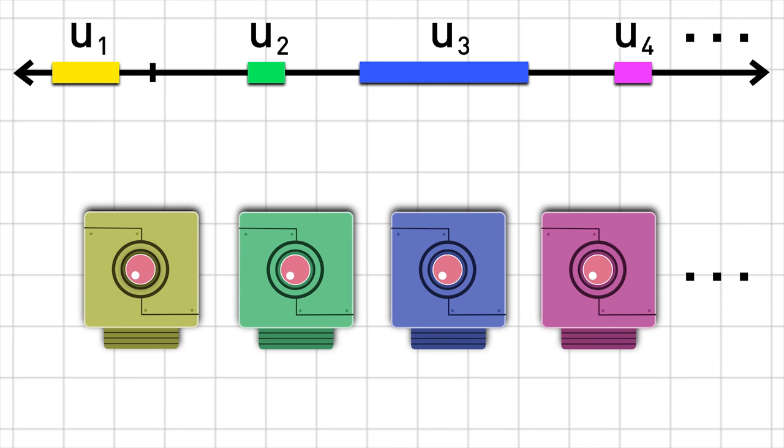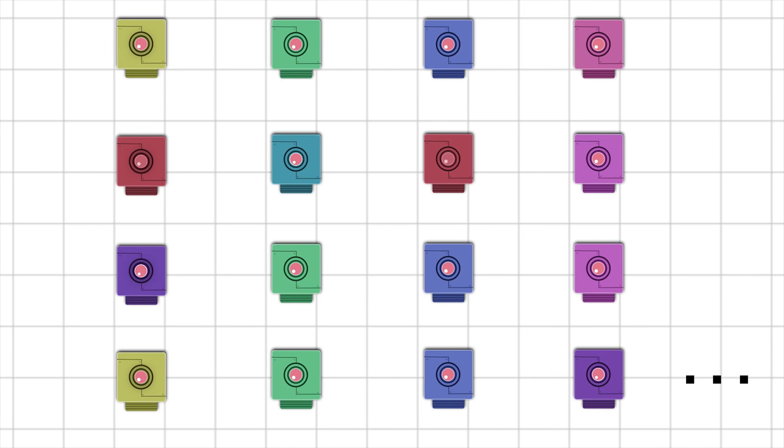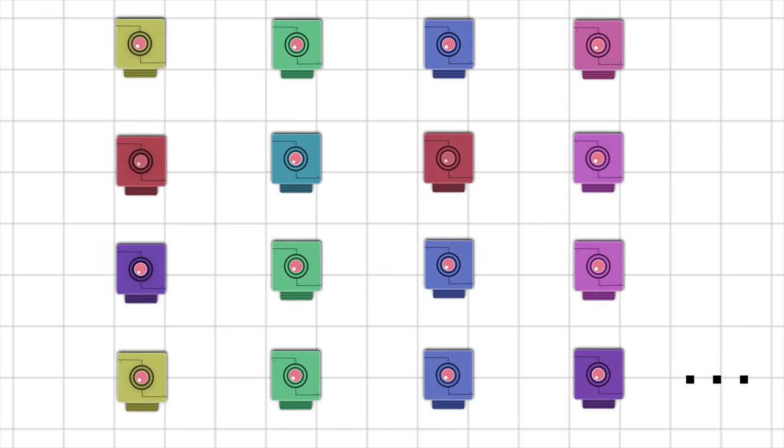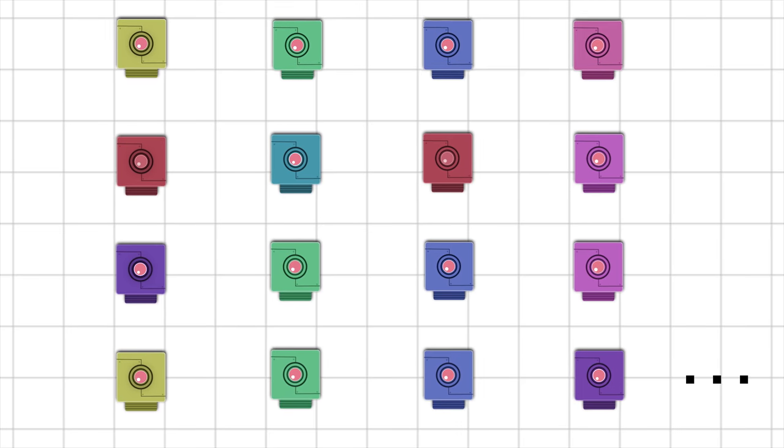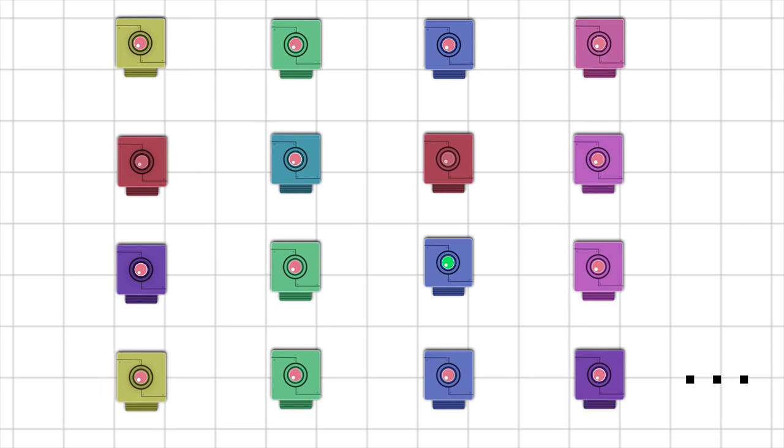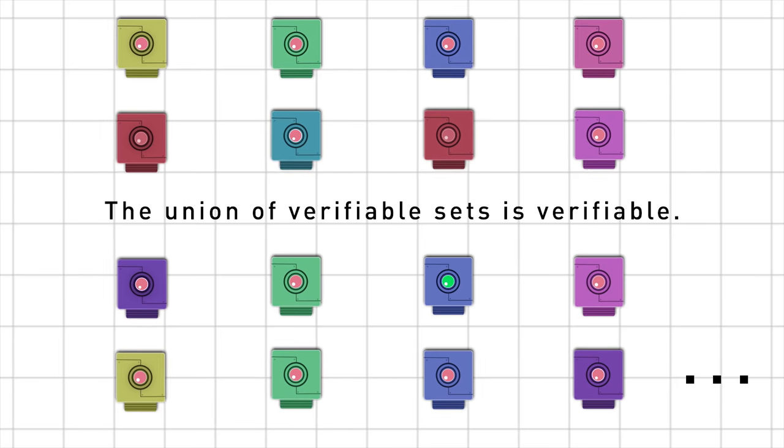What happens if we have infinitely many verifiable sets, u1, u2, u3, and so on? Is their union still verifiable? A number x is in the union of the sets u1 and u2 if x is either in u1 or u2, or possibly both. So if we have infinitely many of these sets, can we verify when a number lies in u1, or in u2, or u3, and so on? Absolutely. We just have to plug that number into each of their indicator machines. If we run the machines in parallel and wait long enough, eventually one of those machines will terminate. Hence, the union of verifiable sets is verifiable.